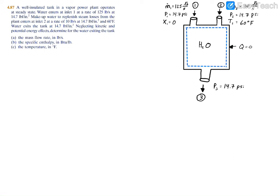We're looking to find the mass flow rate in pounds per second, the specific enthalpy in BTU per pound, and the temperature in degrees Fahrenheit, all at the exit. To find the exiting mass flow rate for part A, we'll use the conservation of mass principle - what comes in must equal what comes out.